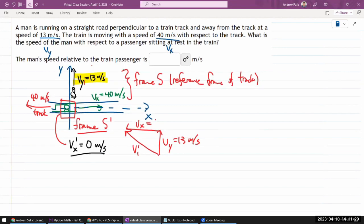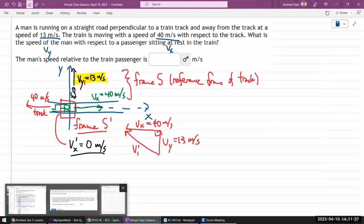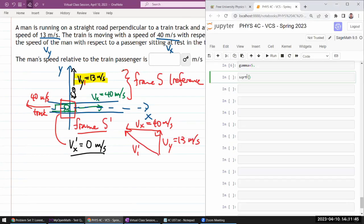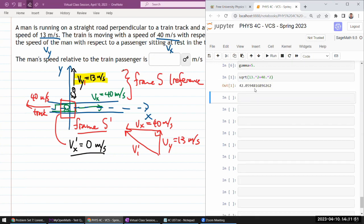You know, v_x was 40. I have a right triangle. So you use Pythagorean theorem. Let me use my calculator to do the calculation. Square root of 13 squared plus 40 squared. And the answer is 42.1.